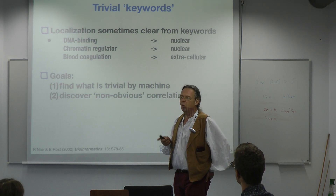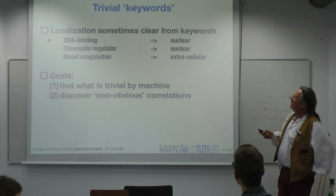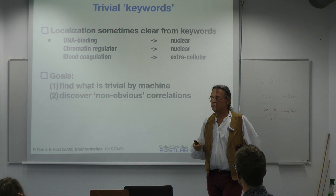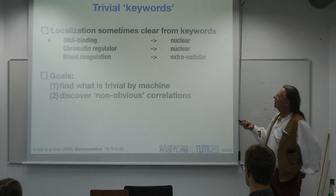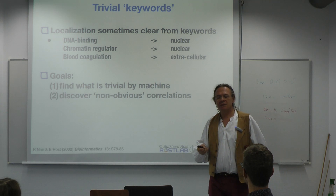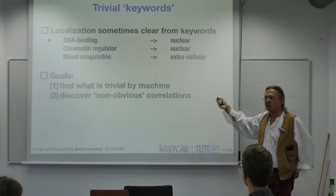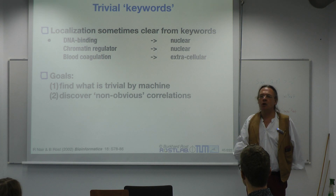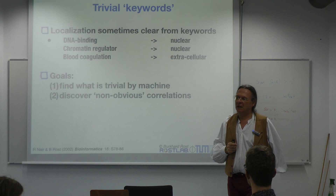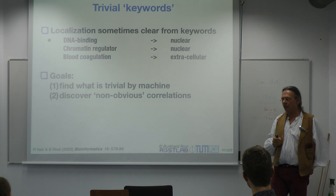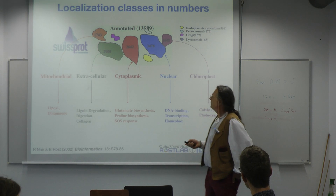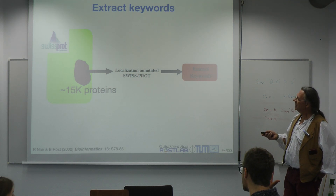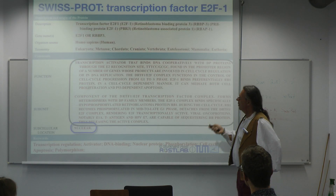Let's define the goals of the method. For some of these associations, it's absolutely clear what the subcellular localization is implied, if you are the expert — blood coagulation, chromatin regulator, DNA binding. But there are most likely other things for which you could not make the map, and certainly machines couldn't unless you teach it. So we want to recognize trivial associations and also non-obvious associations — where one keyword is not enough and we need a mixture of many keywords. You begin with a set of proteins for which you know the subcellular localization — in this case 15,000 — and then you extract keywords from all of these.